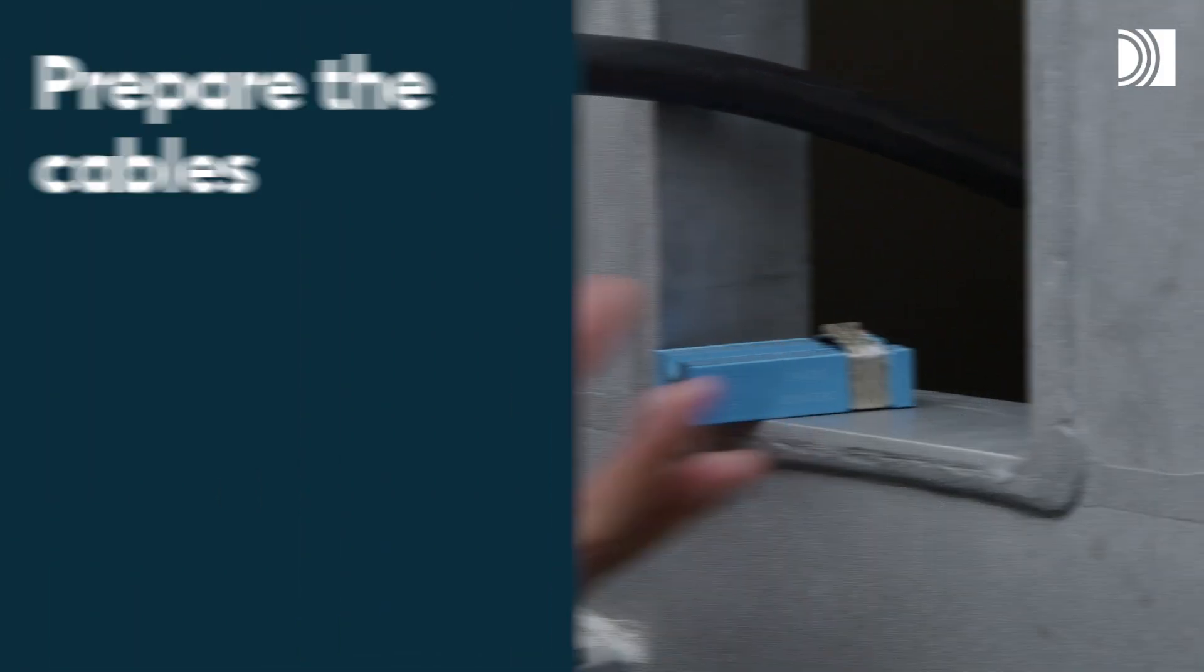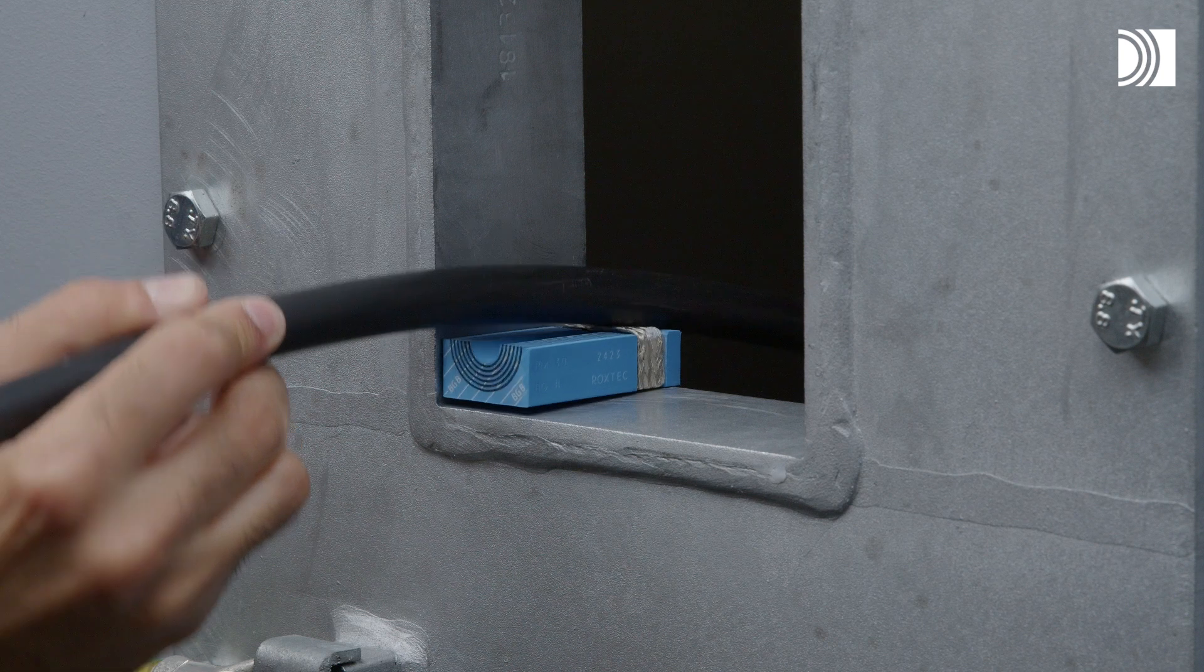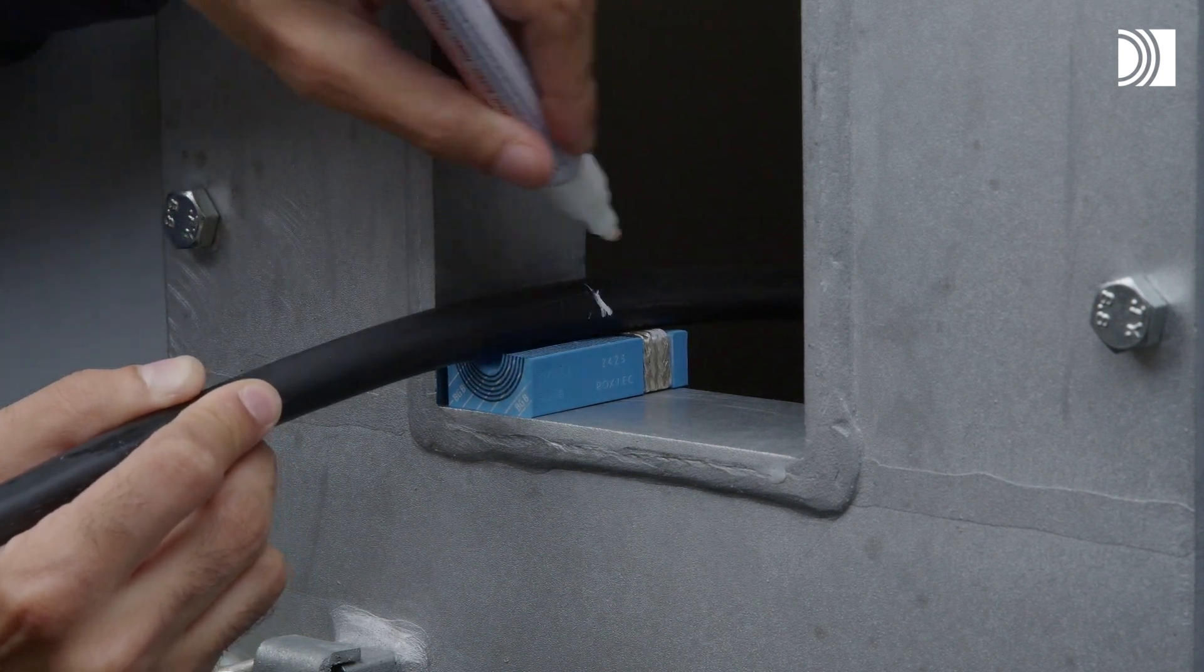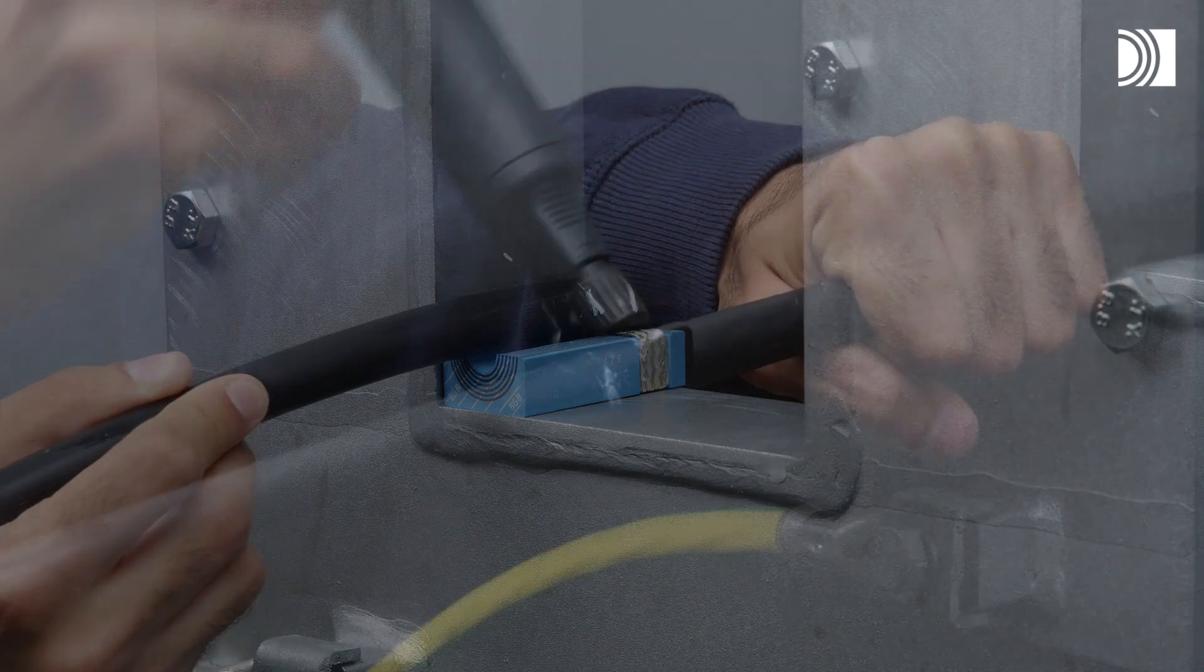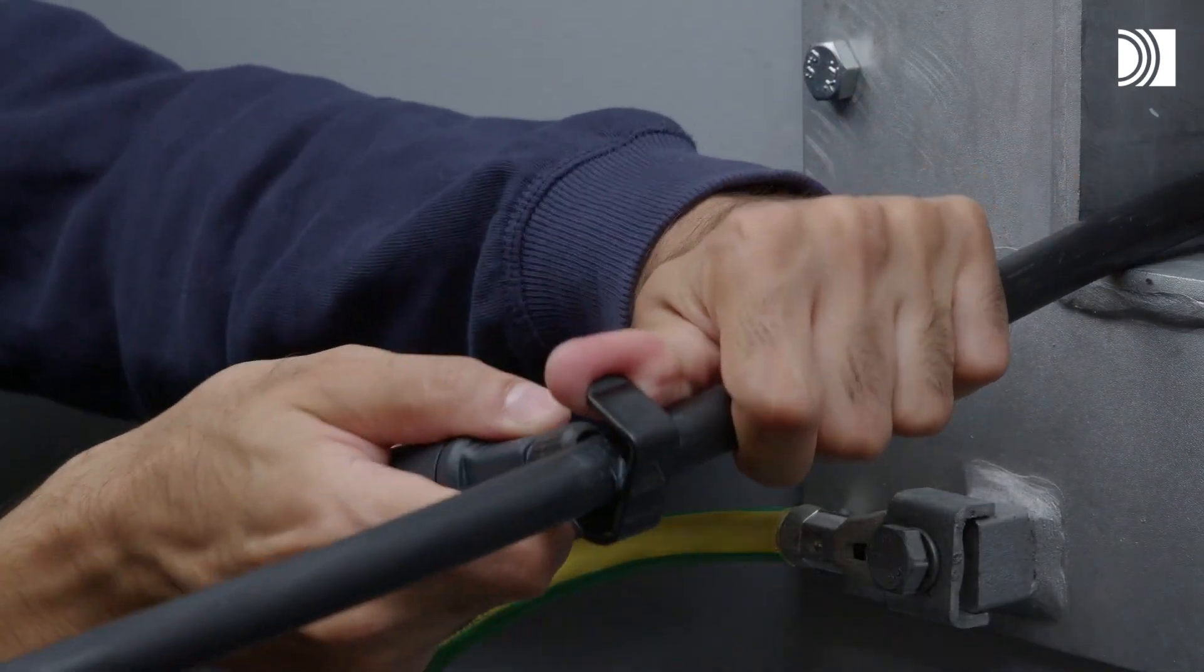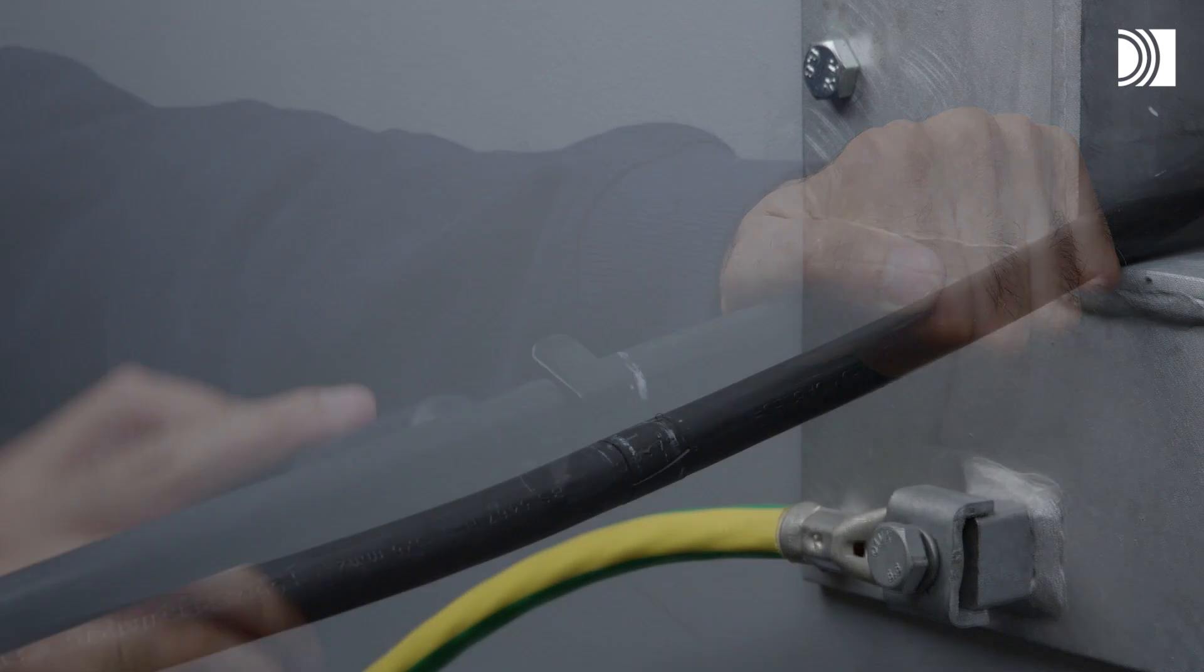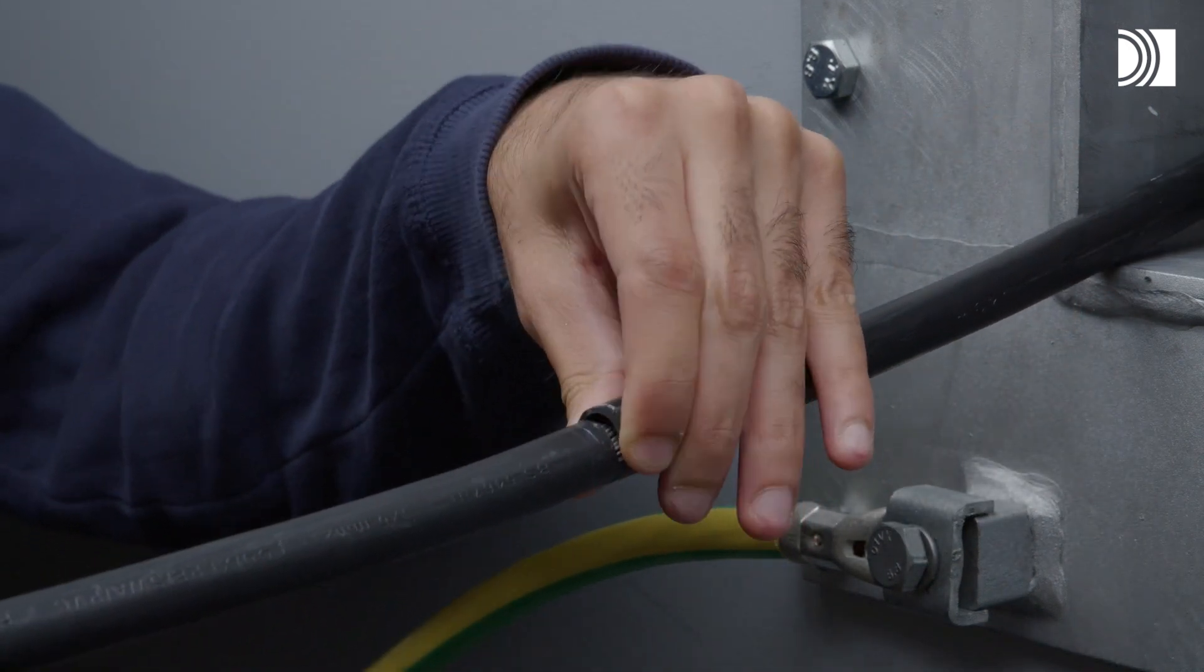Prepare the cables. Hold the cable in its final position. Use a module half to mark where the cable jacket is to be removed. Remove the outer jacket and any plastic foil.